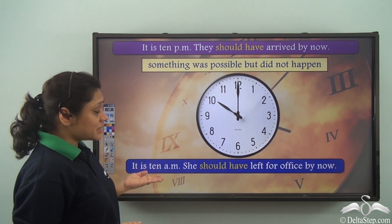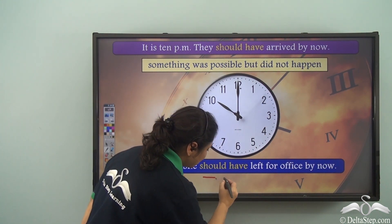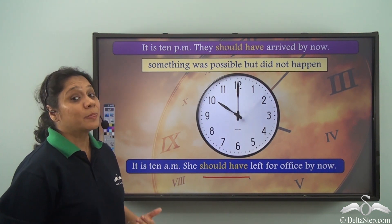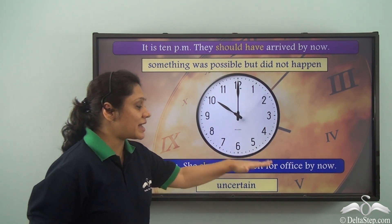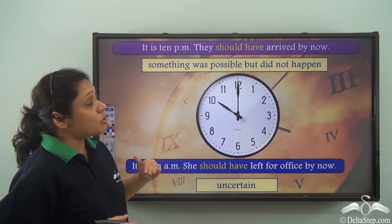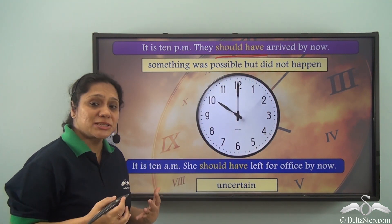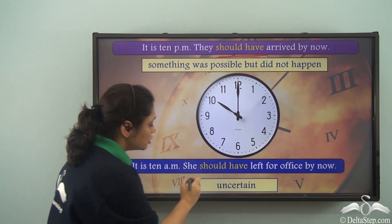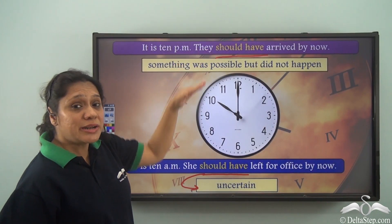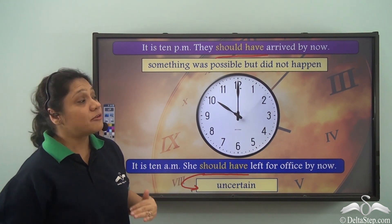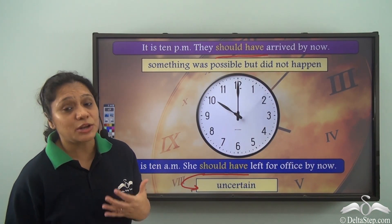If we say 'it is 10 am, she should have left for office by now,' 'should have' is expressing something completely different — it is telling us that we are not very sure; we are a little uncertain if she has left for office by now or not. So 'should have' can show that something was possible but did not happen, or it can show that we are uncertain about something happening. The meaning of 'should have' changes depending on the context in which it is used.